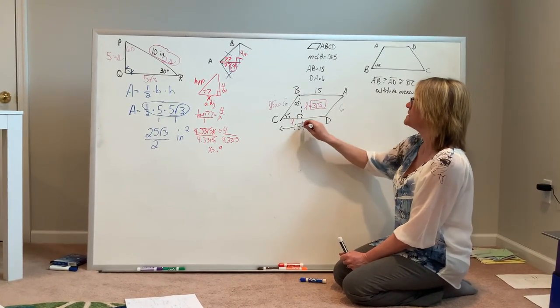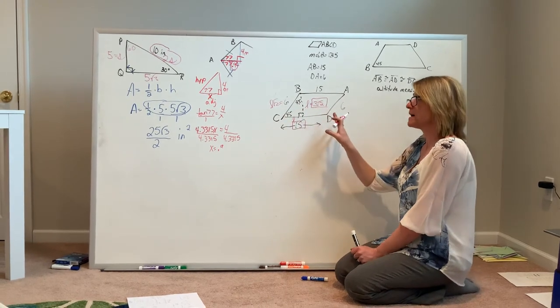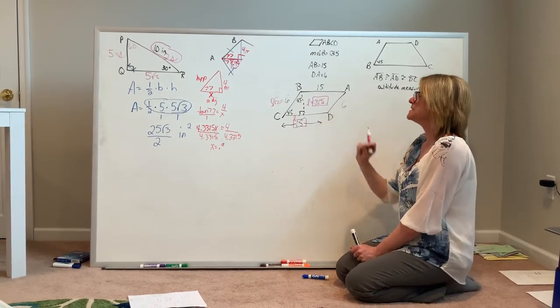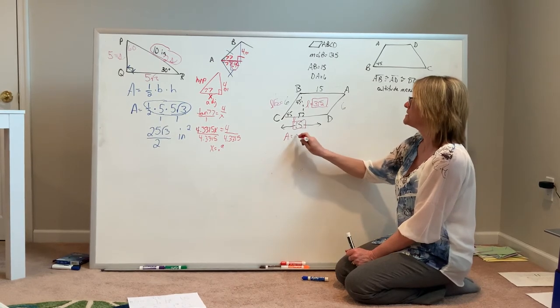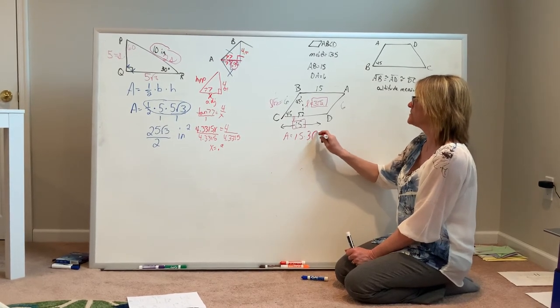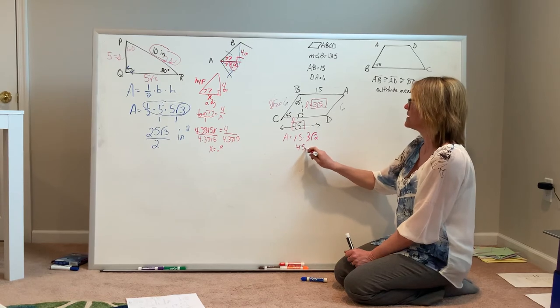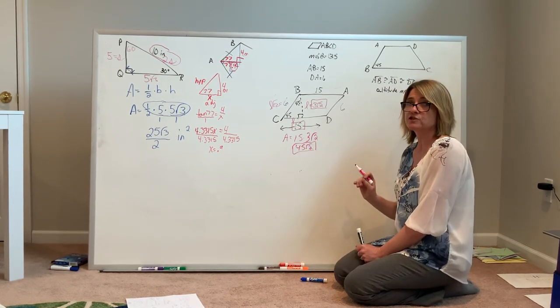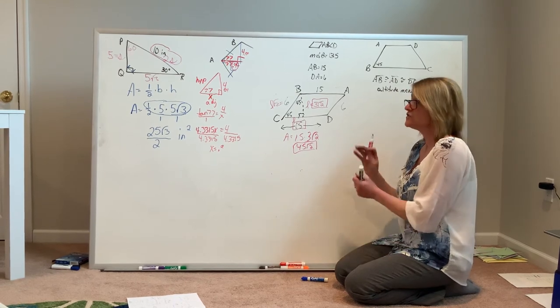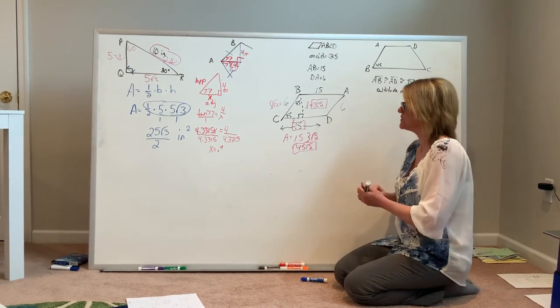You can see that as long as you're setting up your parallelogram properly, it doesn't matter which combination of base and height you use, the result is still going to give me 15 times 3 square root of 2 is 45 square root of 2. The size of the parallelogram doesn't change because I labeled it differently, it's just that the work to get to that answer looks a little different.